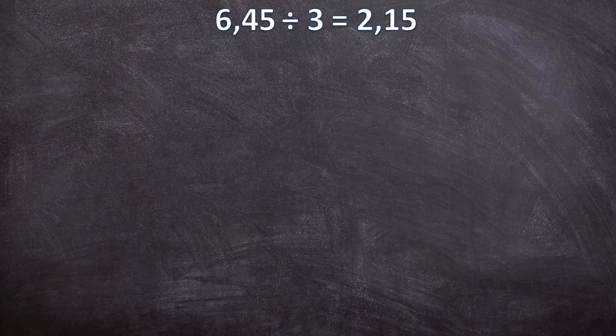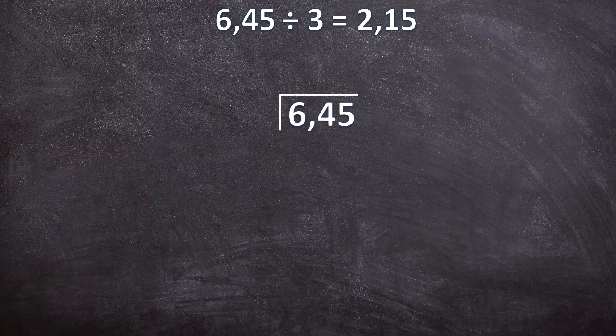To find the solution using long division, we first need to set up the sum correctly. We need our division bar, then our dividend — the number we are going to divide — goes underneath the division bar. The number we will be dividing with goes in front of the division bar, and our answer will always go at the top of the division bar.